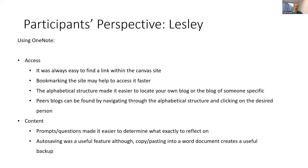From a user's perspective, the benefit in terms of access was that it was always easy to find a link on the Canvas site, which you could bookmark to make it even easier. Having an alphabetical structure made it really easy to find your own blog and those of friends or colleagues you'd specifically like to follow. Having the prompts and questions made it easier to determine exactly what to reflect on — for someone maybe not familiar with reflection, it gave them a starting point. The autosave feature was useful too, and as a safety you could always do it in a Word document and copy and paste to have a saved backup.